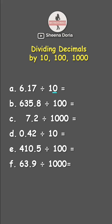So since we have one zero, let's move the decimal point one time to the left. There you go. So our answer is 0.617.